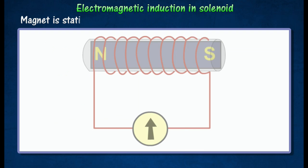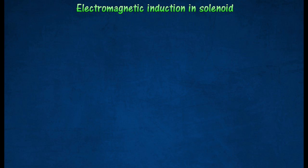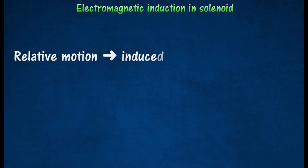If the magnet is stationary inside the solenoid, the galvanometer needle remains in the center zero position, indicating that no current is produced. The observation of the experiment shows that current is induced in a solenoid when there is relative motion between the solenoid and the magnet.